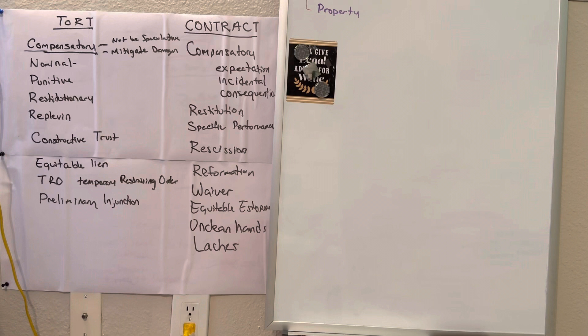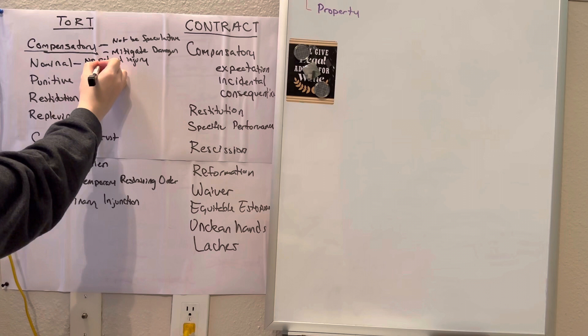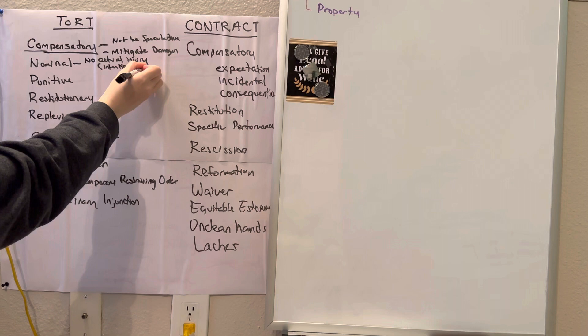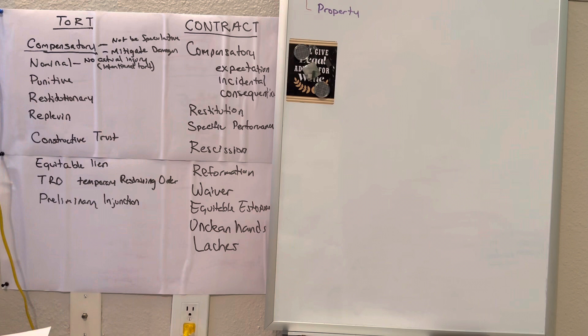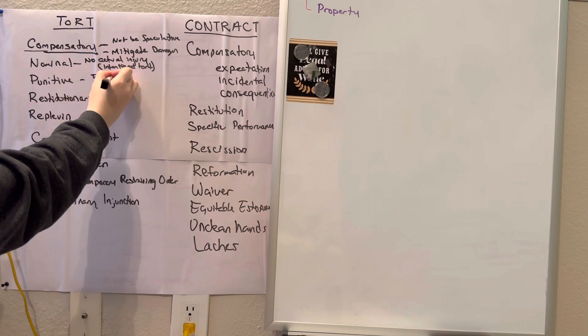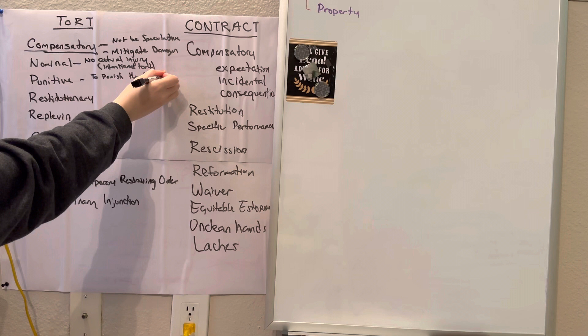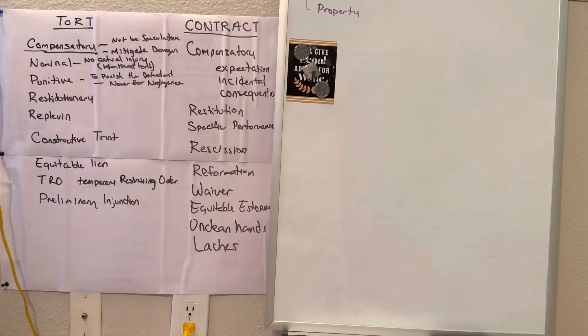Nominal damages are when the plaintiff did not suffer actual injury in an intentional tort. Punitive damages are additional damages to punish the defendant. They are never for negligence claims. Why? Because we're not going to punish you just for acting negligently.